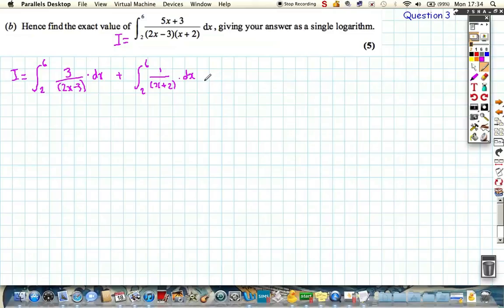So we can then integrate each of these bits in turn. So this first one, we're going to get 3 over 2 log 2x minus 3 from this.